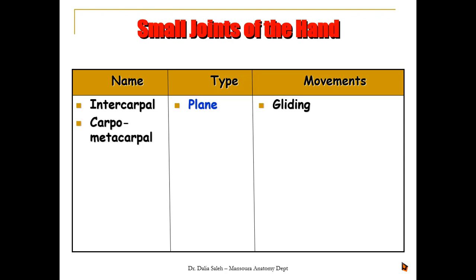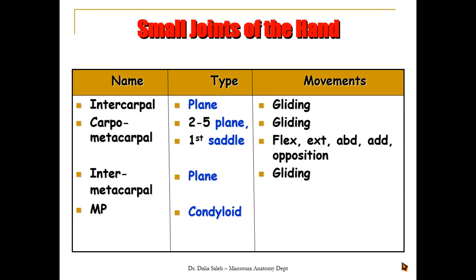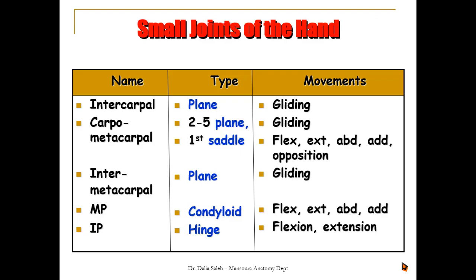The intercarpal joints are plain joints that allow only gliding movements. The carpometacarpal joints: from the second to fifth, they are plain synovial joints allowing gliding movements. The first carpometacarpal is a saddle joint at the base of the thumb, allowing flexion, extension, abduction, adduction, and opposition of the thumb. The intermetacarpal joints are plain joints between the bases of the metacarpal bones, allowing gliding movements. The metacarpophalangeal joints are condyloid or biaxial joints allowing flexion, extension, abduction, and adduction. The interphalangeal joints are hinge joints allowing only flexion and extension of the phalanges.